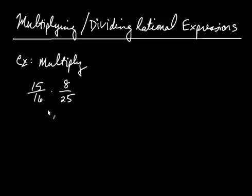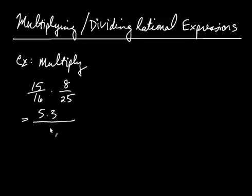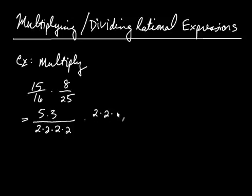If you were asked to multiply these two fractions together, what you do is you look at 15 as 5 times 3 — those are the prime factors of 15. And then 16 is 2 times 2 times 2 times 2 when you completely factor it into its primes. And then 8 is 2 times 2 times 2, and over 25, which is 5 times 5.